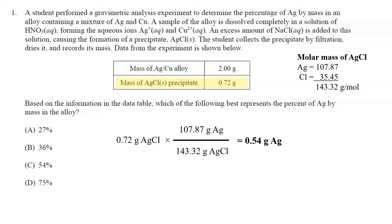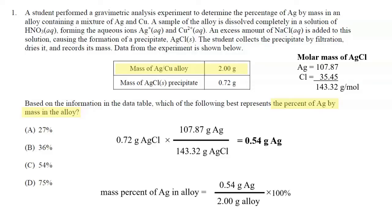When students are not paying attention to their units, they might think that 0.54 is 54%, making choice C seem attractive. But this is not a percentage of silver by mass — this is the mass of silver in the 2-gram sample of the alloy. To find the percent of silver by mass, we take 0.54 grams divided by the mass of the alloy times 100. So 0.54 divided by 2 times 100 gives us 27% silver by mass. The correct answer is A.